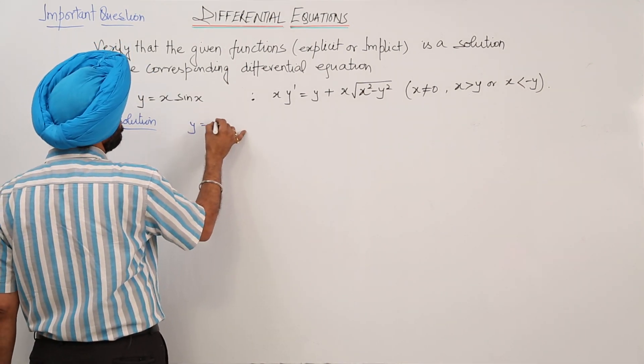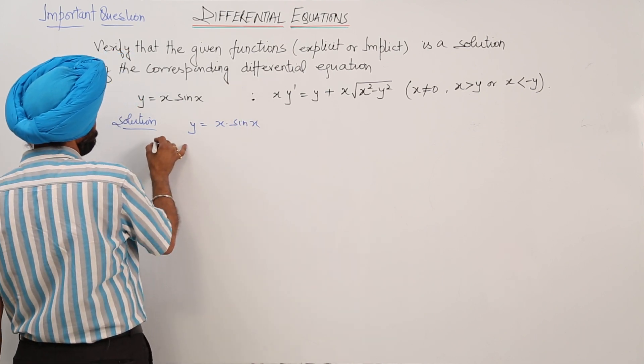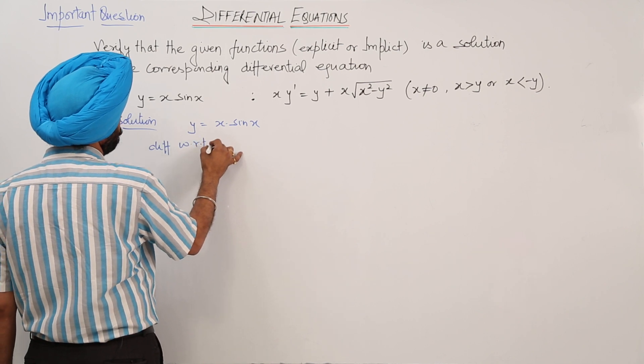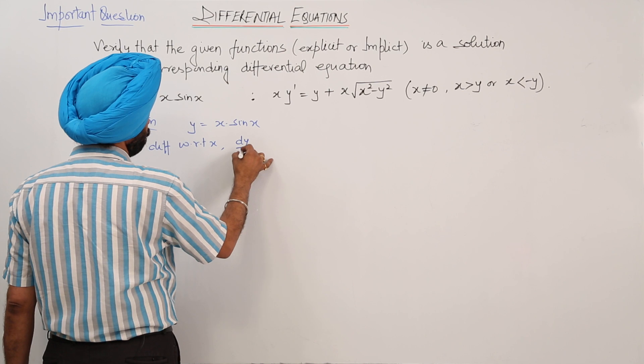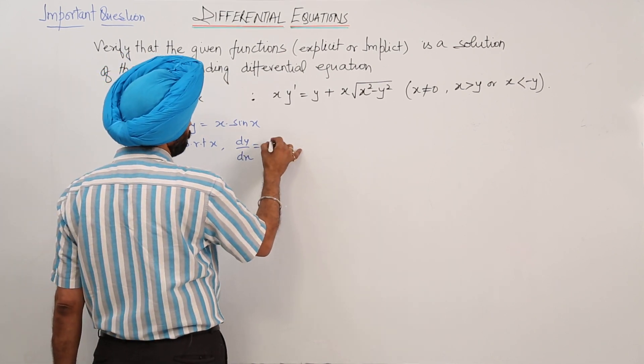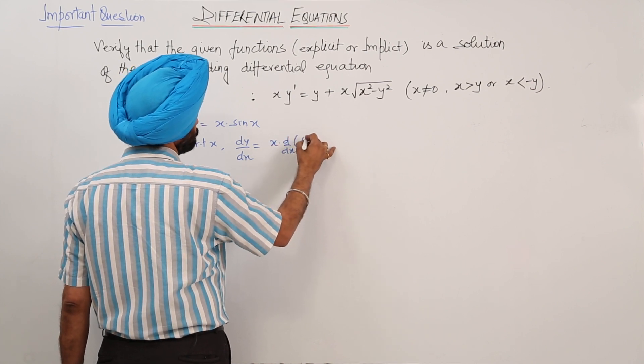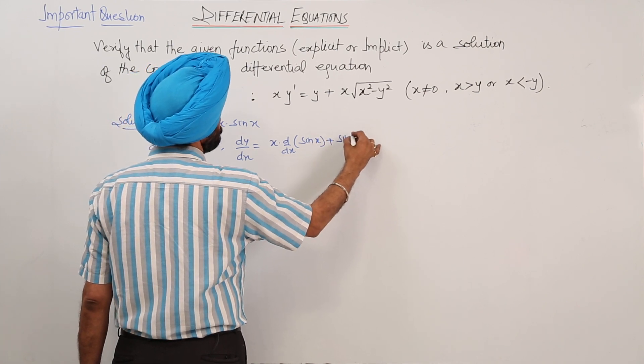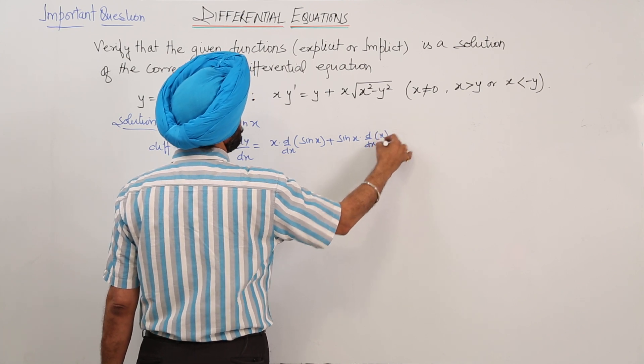Given y equals x sin x, now differentiating with respect to x, dy/dx is equal to - using the product rule - the first function as is times the derivative of sin x plus sin x as is times the derivative of x.